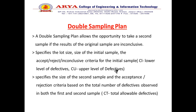The second is the double sampling plan. This allows the opportunity to take a second sample if the results of the original sample are not good. You specify a lot size, the size of initial samples, and the accept, reject, or inconclusive criteria for the initial samples. There are two levels — a lower level and an upper level — and the total allowable defectives depends on these two levels.